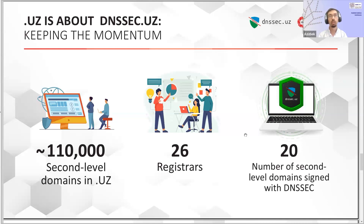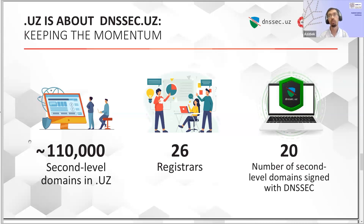Speaking about statistics — this data is a little outdated — we now have about 122,000 domain names in .uz, 27 registrars, and about 50 signed domain names, which is less than 0.01% of all domain names. Why are the numbers so small? I will tell you about the challenges.